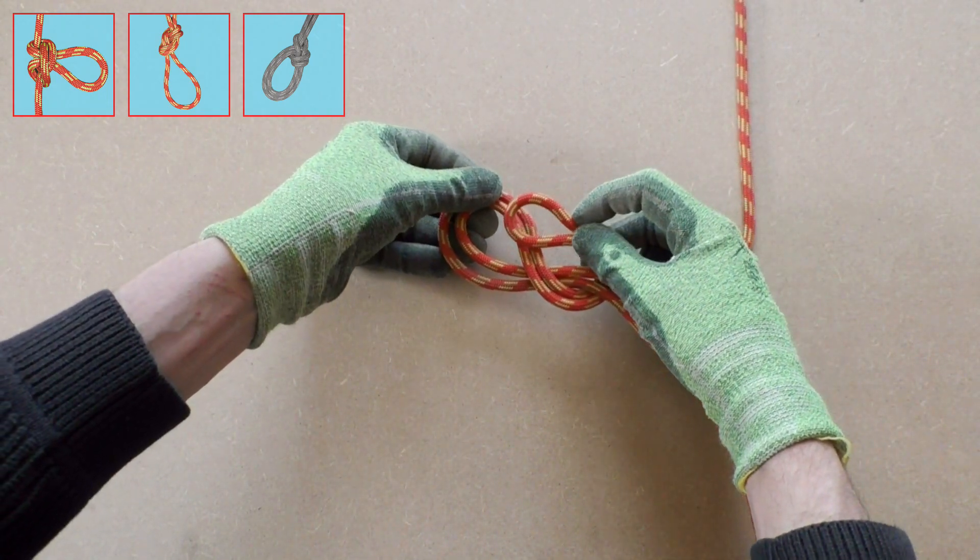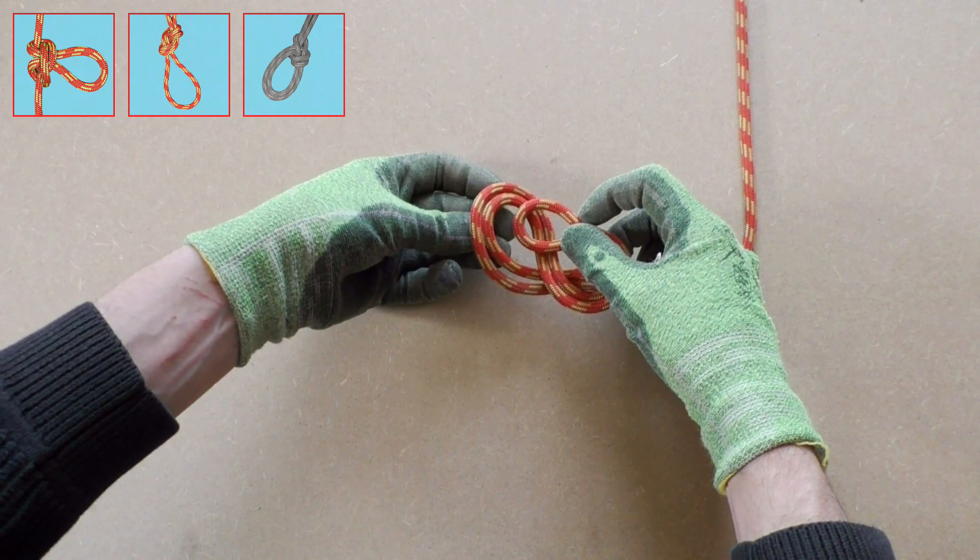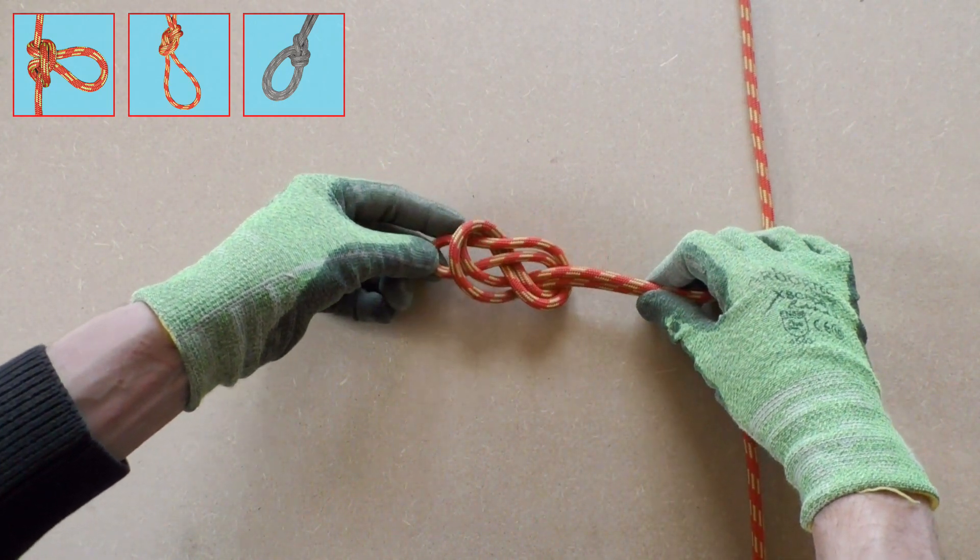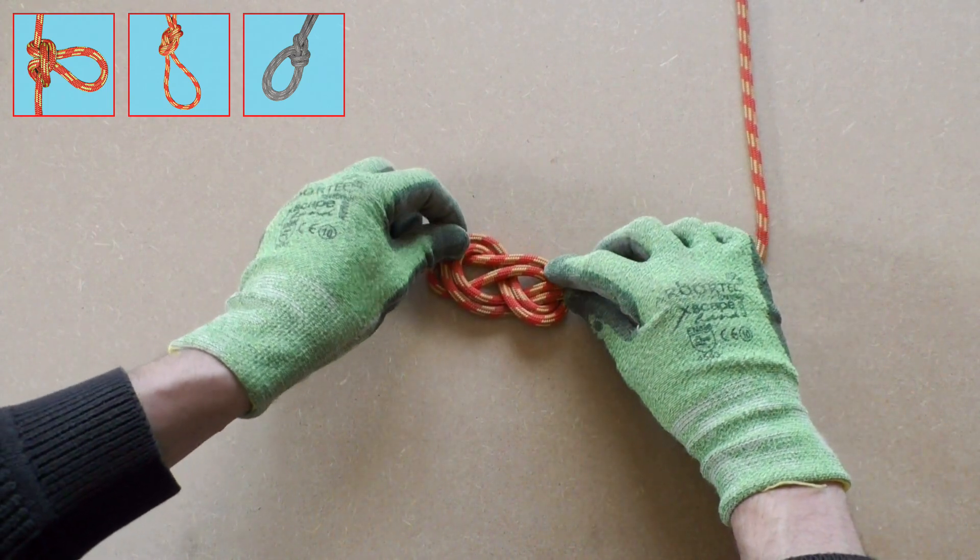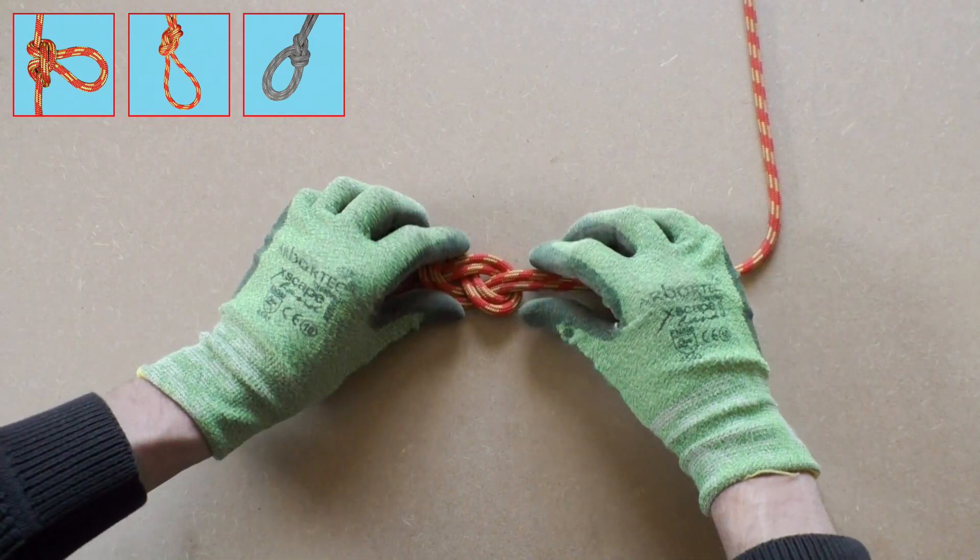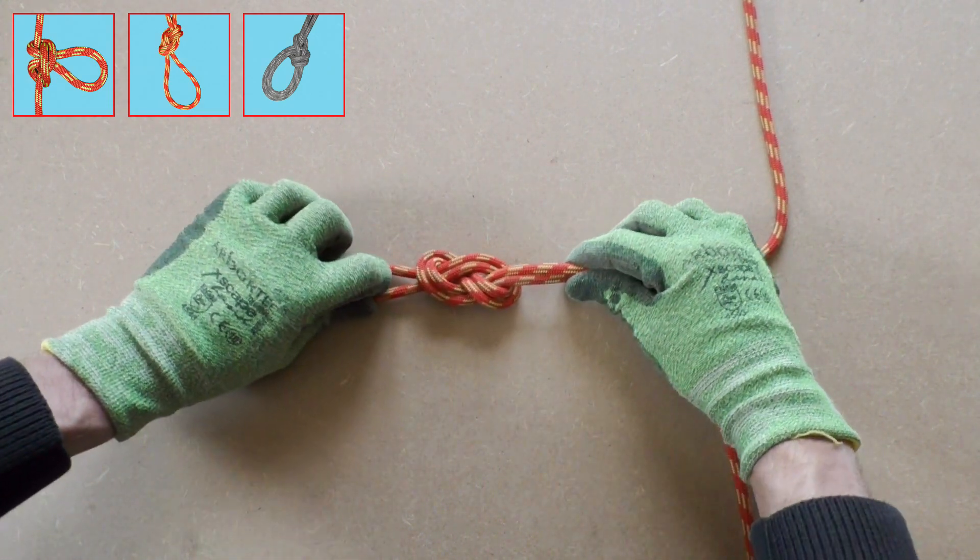To finalize the figure 8 knot on a bite we are taking the tip or working end then we will stick it through the loop from above. You can clearly see where the figure 8 knot gets its name from. This makes the figure 8 knot very easy to check.